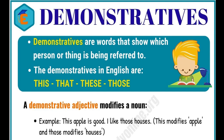Here are examples: 'This apple is good' and 'I like those houses.' In the first sentence, 'apple' is the noun and it is modified by 'this' (T-H-I-S). In the second sentence, 'houses' is the noun, modified by 'those'. So 'these' and 'those' are demonstratives.